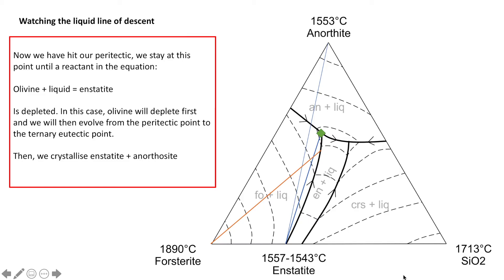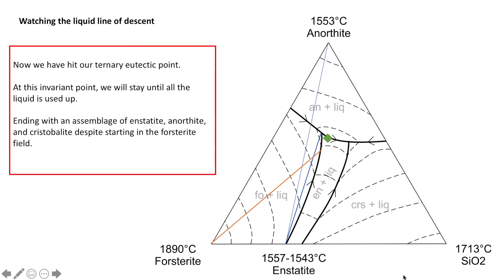All the olivine will be consumed and that liquid will then proceed to evolve downward towards the ternary eutectic point. We're going to stay here until all the liquid has been crystallised at an assemblage of enstatite, anorthite, and cristobalite. What's really interesting about this example is that we start with forsterite, but the final rock that we produce has no forsterite in it.